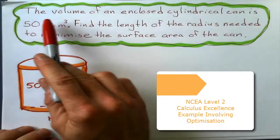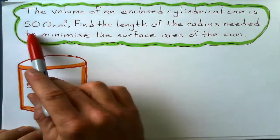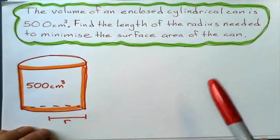Let's start this one. Volume of an enclosed cylinder, a cylindrical can is 500 cubic meters. Find the length of the radius needed to minimize the surface area of the can.